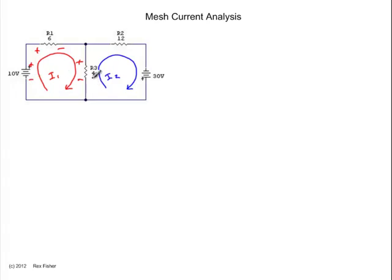The blue loop is going to go up through R3, creating a polarity of plus to minus. It's going to go through R2, creating a polarity of plus to minus. And the battery is going to be minus to plus.